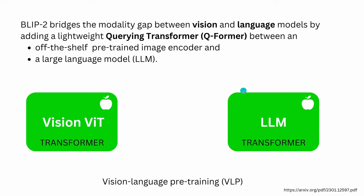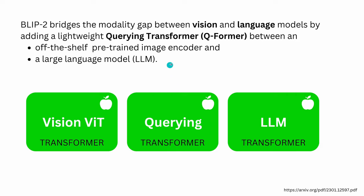To bridge the modality gap between vision and language, they add another transformer — and isn't that a surprise? We have a transformer connecting to a transformer connecting to another transformer. This middle transformer is called a Query Transformer, or Q-Former. Whenever you read about the Q-Former starting in February/March 2023, you know exactly what we're talking about: the interface between vision transformers and language transformers.